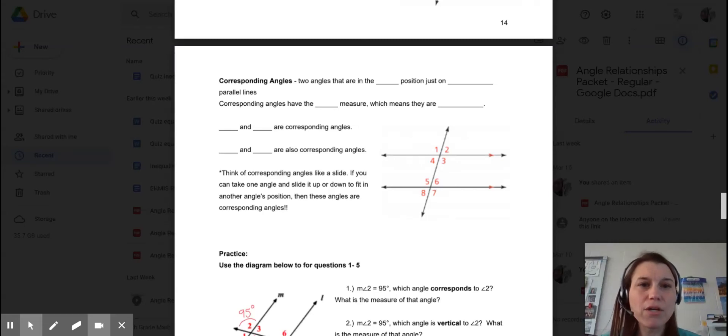Let's talk about corresponding angles. Corresponding angles can be found in lots of different places, not just parallel lines cut by a transversal, but that's what we're going to focus on.